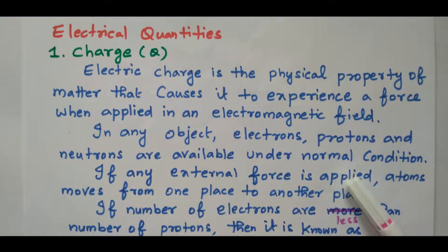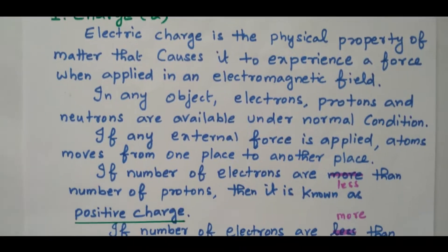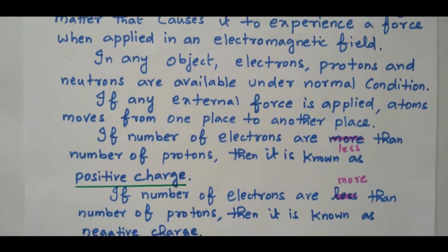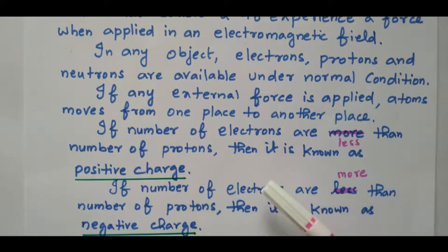Under normal condition, there is no movement of electrons. If any external force is applied, then the atoms will move from one place to another place. While the electrons are moving, if the number of electrons is less than the number of protons, then it is known as positive charge — protons are more, so the entire object is termed as positive charge.